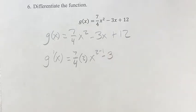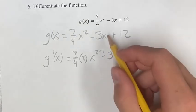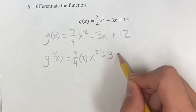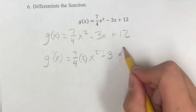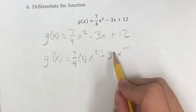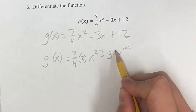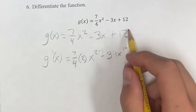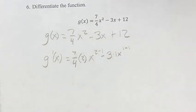Minus 3 times x to the (1 - 1), bring that 1 down, is just 1. Plus 12, 12 is just a constant, so its derivative is 0.